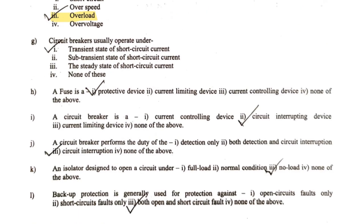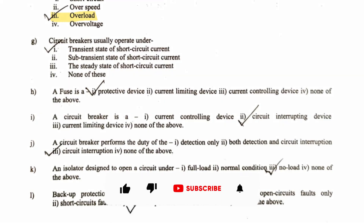The next question: circuit breakers usually operate under — transient state of short circuit current, sub-transient state, steady state of short circuit current, or none of these? You must know that circuit breakers are designed to operate within a very short amount of time from the occurrence of the fault, when the current is in the transient state. So transient state of short circuit current is the correct answer.